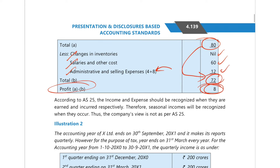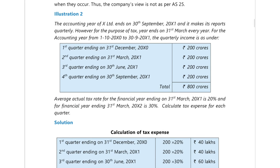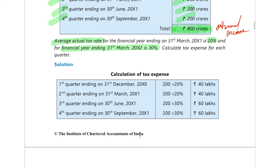Profit is 80 minus 72 = 8 crores. The key point: the 10 crores of expense should not be deferred to another quarter — book it in this quarter itself. Moving to illustration number two: company X Limited, quarter ending 30th September. The annual income across four quarters is 200, 200, 200, 200 crores, totalling 800 crores.